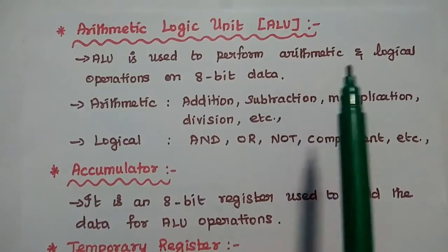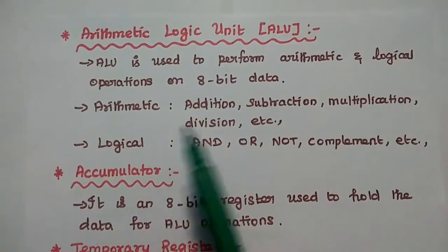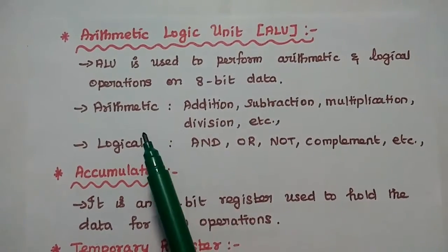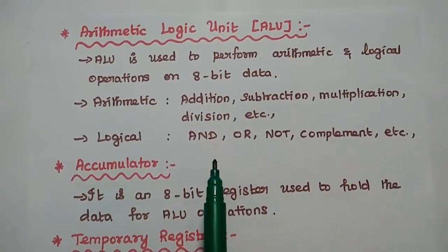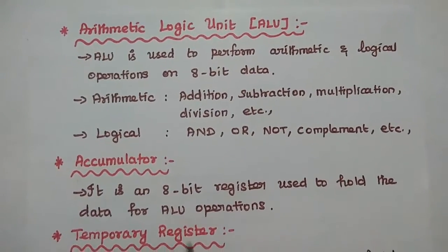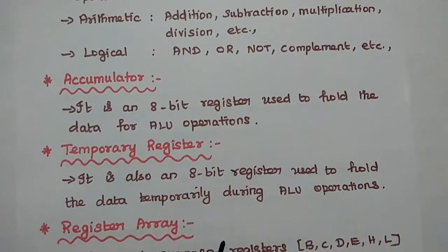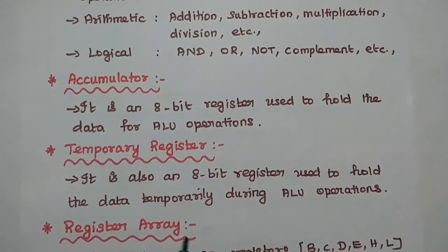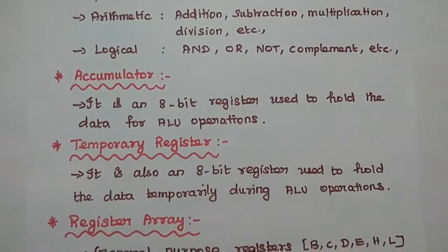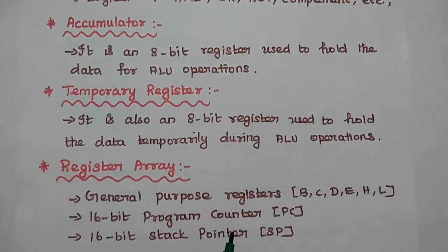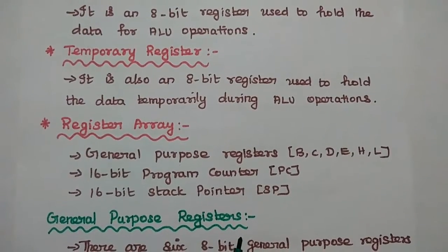The arithmetic logic unit (ALU) is used to perform arithmetic and logical operations on 8-bit data. Arithmetic includes addition, subtraction, multiplication, etc. Logical operations include AND, OR, NOT, complement, etc. The accumulator is an 8-bit register used to hold data for ALU operations. The temporary register is also an 8-bit register used to hold data temporarily during ALU operations.